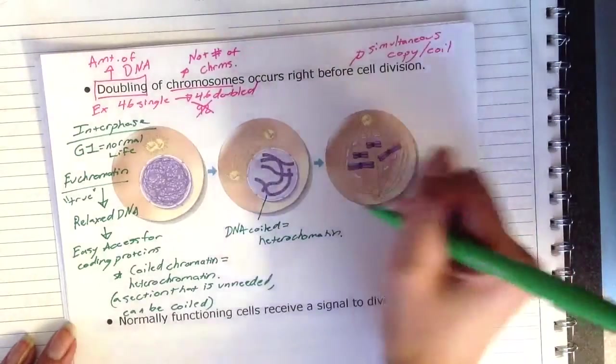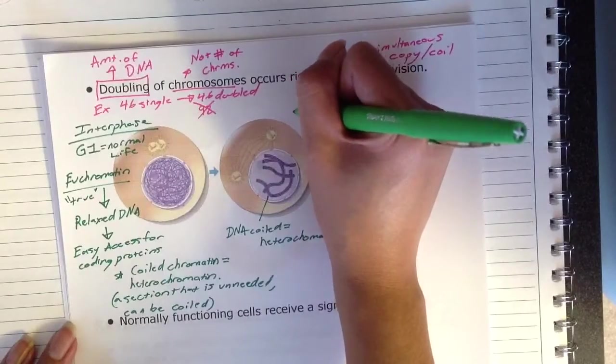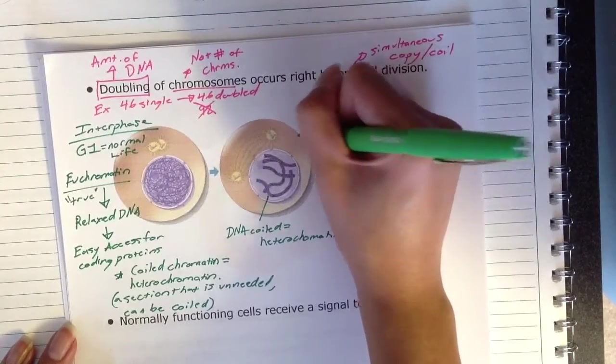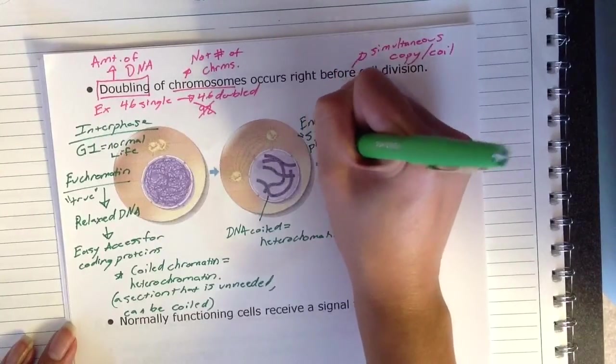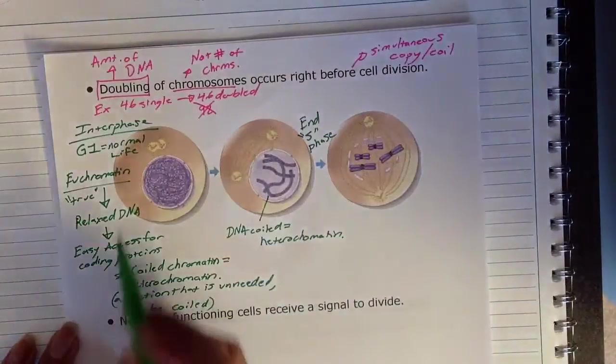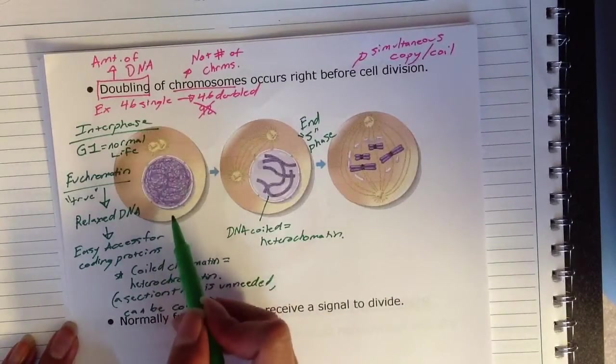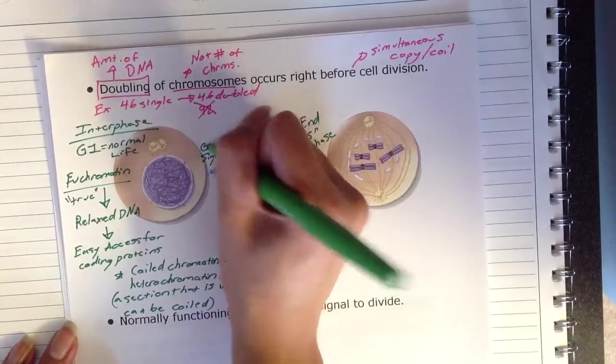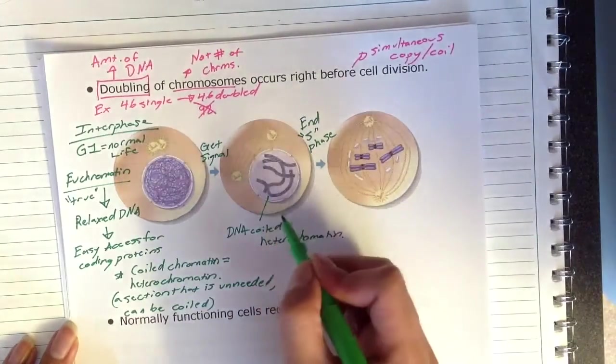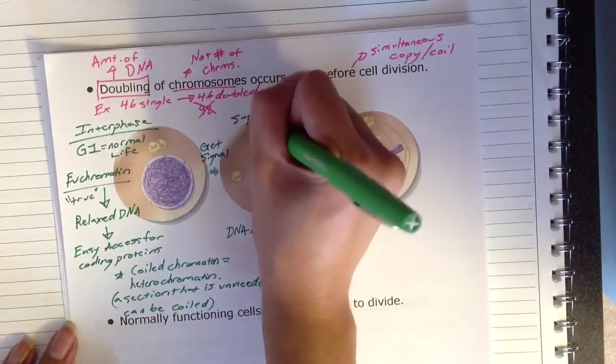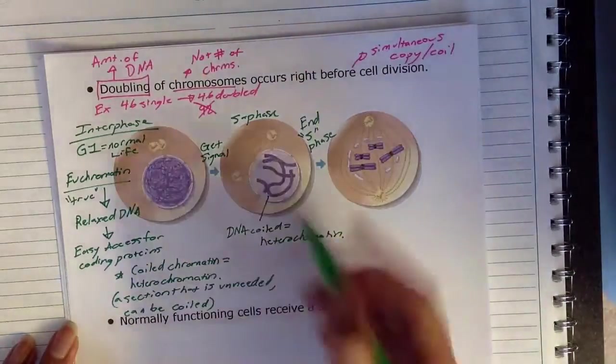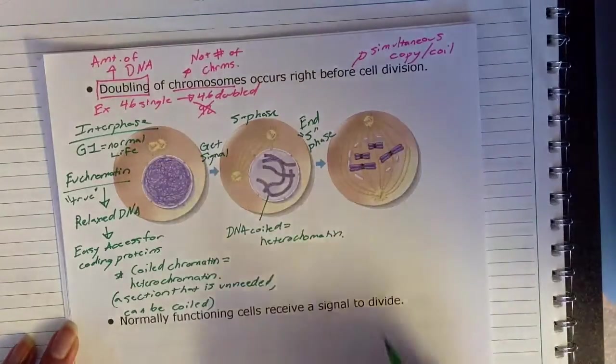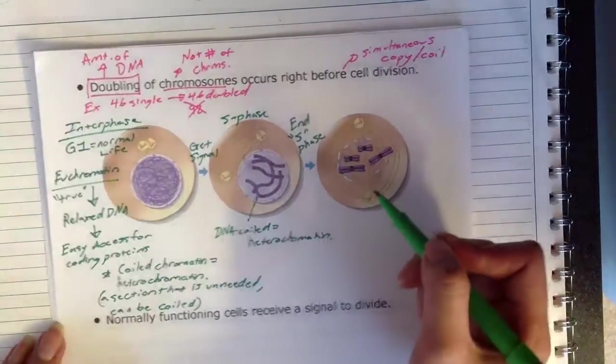And in the next cell, this is actually going to end what is known as our S phase. So here you have your DNA. It's normally relaxed. We're actually going to receive a signal. We're going to get a signal, and the signal is going to tell us to copy our DNA. And so now we're in the S phase, synthesis phase. The DNA here, you can actually see that they're kind of in pairs. You have one, two, three, four pairs.